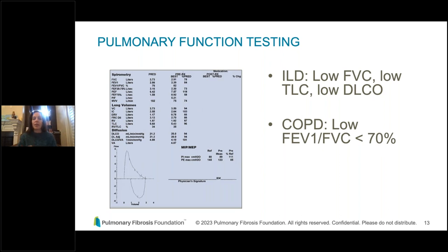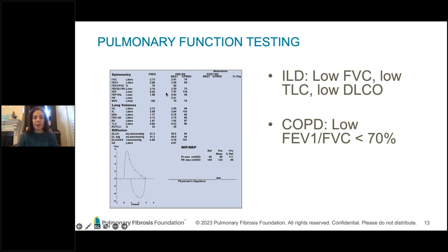The diffusing capacity — measured with a single breath maneuver — tells us how well gas transfers through the lungs into the bloodstream, and in ILD this tends to be lower than expected. On the PFT report, the PRED column shows values predicted for the patient's age, height, and gender; BEST shows their actual performance; and PERCENT PRED shows how they performed relative to what was expected.